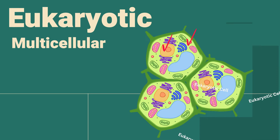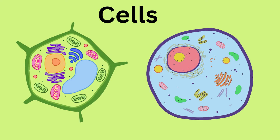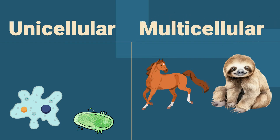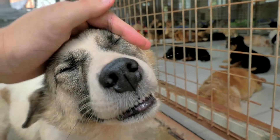So, in summary, all living things are made up of cells, and they can be unicellular and have one cell, or multicellular and have two or more cells.